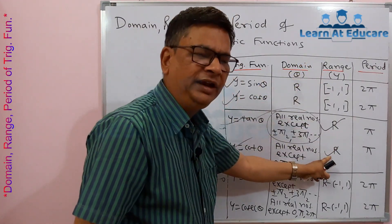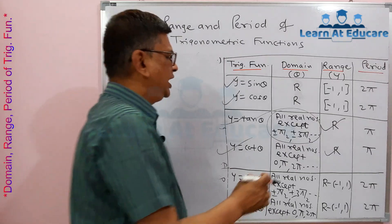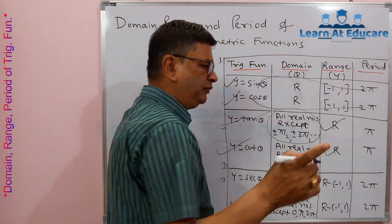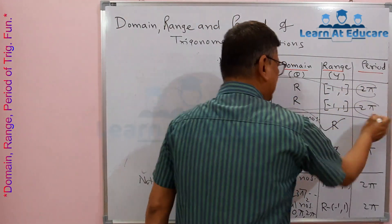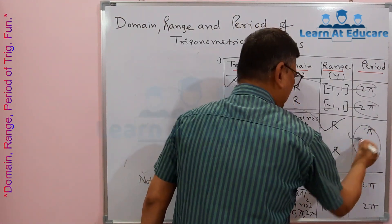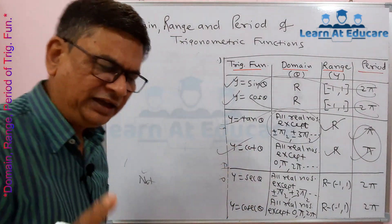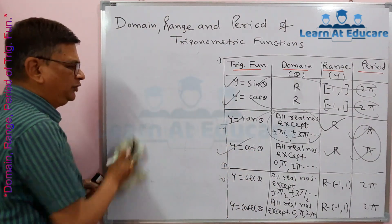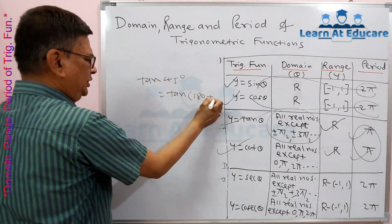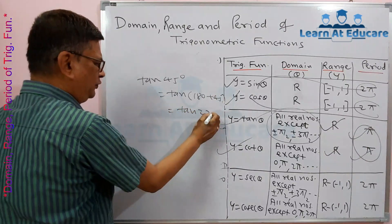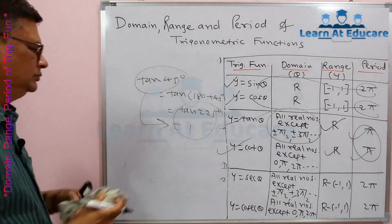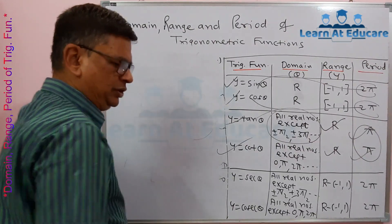Regarding period: sin θ has a period of 2π and cos θ also has a period of 2π, meaning after every 360° the values of sine and cosine repeat. The period of tan θ and cot θ is π — their values repeat after every 180°. For example, tan 45° = tan(180° + 45°) = tan 225° = 1.